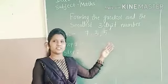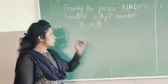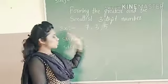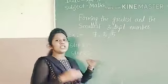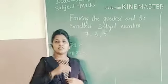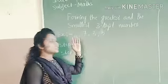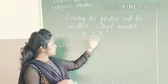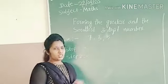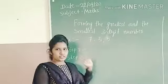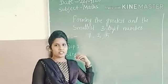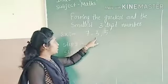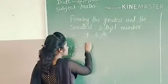Now let's find the smallest digit numbers. The given digits are 7, 3, 5. To form the smallest number, first step: we arrange these numbers in ascending order. Ascending order means from smaller number to the bigger number. In these 3 digits, which one is the smallest? 3 is the smallest digit, so I will write 3.